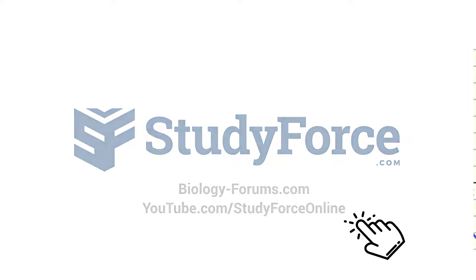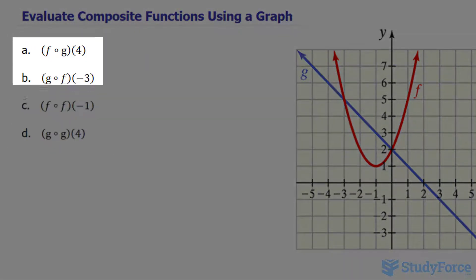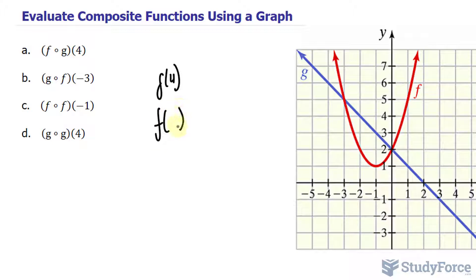In this lesson, I'll show you how to evaluate composite functions using a graph. In our very first part, we have f composed of g at 4. To do this, we first have to find out what g at 4 is according to this graph. Once we find out its output, we then place its output, whatever it is, into f. So let's find out what g at 4 is.